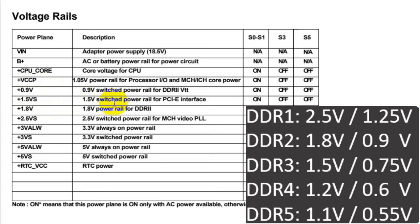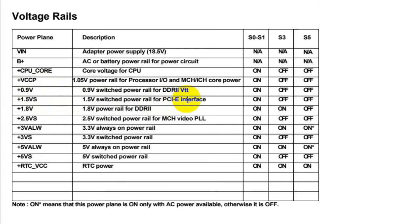We have 1.5V, which is the power rail for the PCIe interface — for interfaces and connectors. Then we have plus 2.5V, which is the power rail for the MCH, the memory controller hub. This 2.5V is also for chipsets including the graphics card and northbridge.